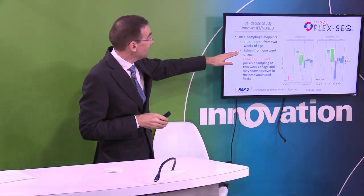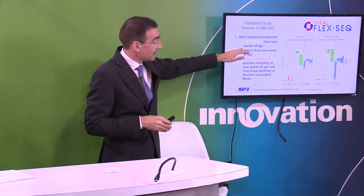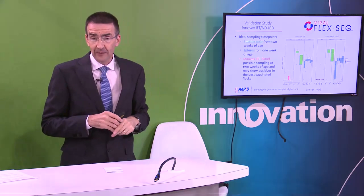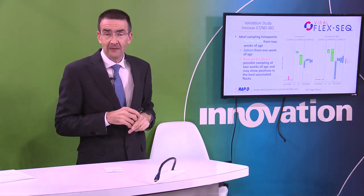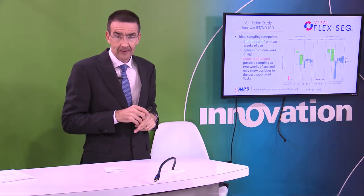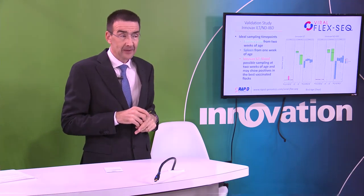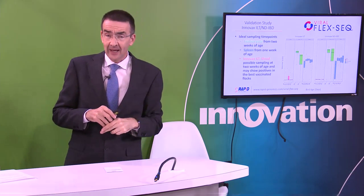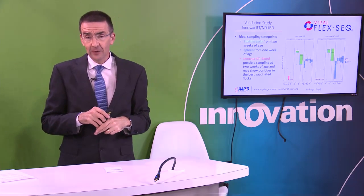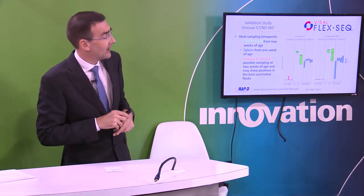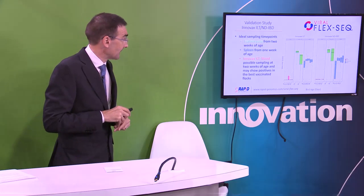We recommend that a two-week of age sample of feather pulp is a very good sampling time point in the young live animal to determine if high volumes and high quantities of Innovax are circulating.